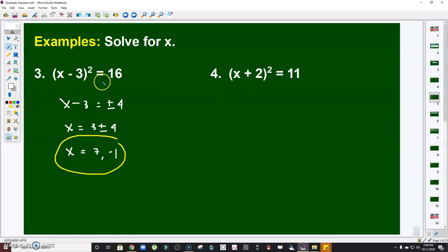Next, how about number 4? Same like what I did in number 3. Extract the square root. That will be x + 2 = ±√11. And that's it. All we have to do is solve for x. All we have to do is to transpose 2. So that will be x = -2 ± √11.